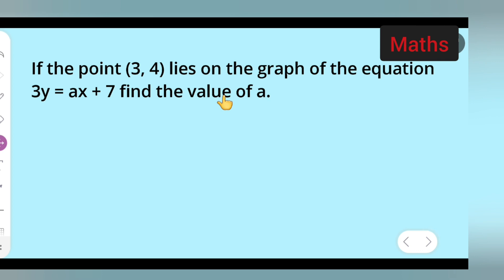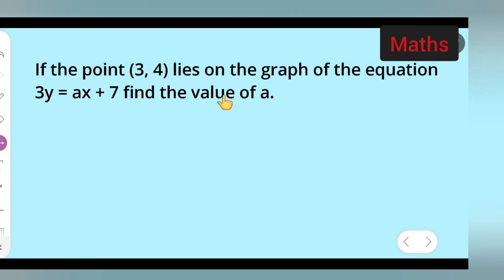First, I can read the problem. If the point 3 comma 4 lies on the graph of the equation 3y equals ax plus 7, find the value of a. So basically I need to find the value of a.